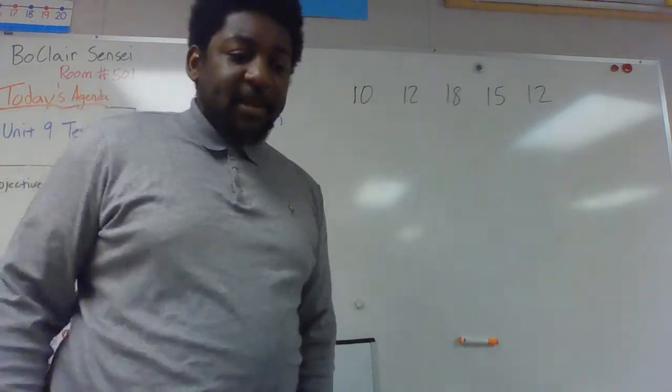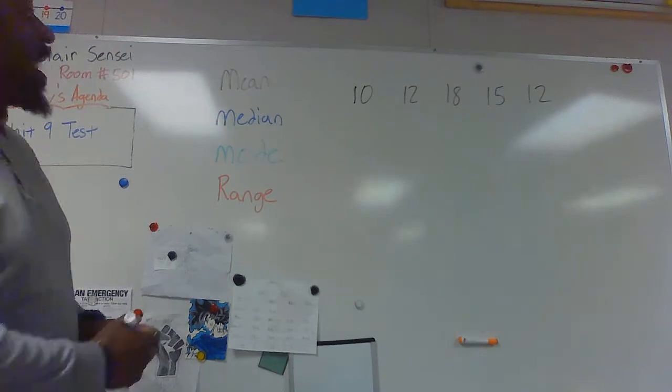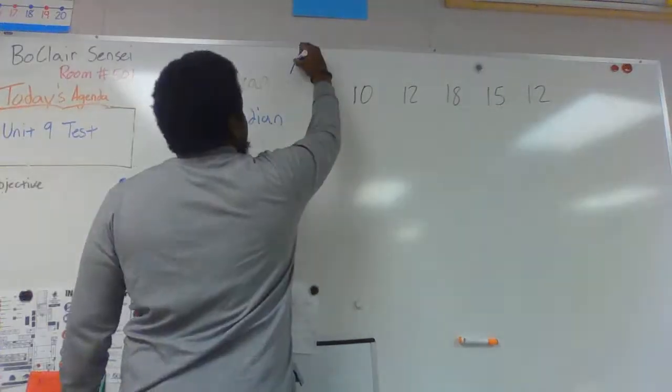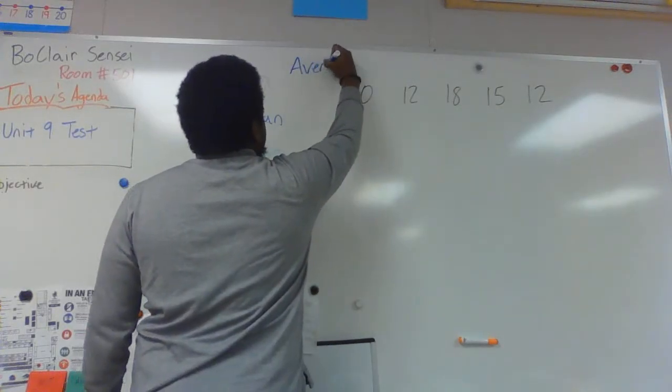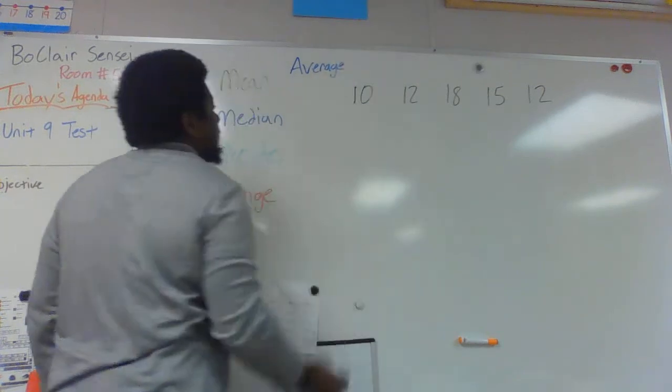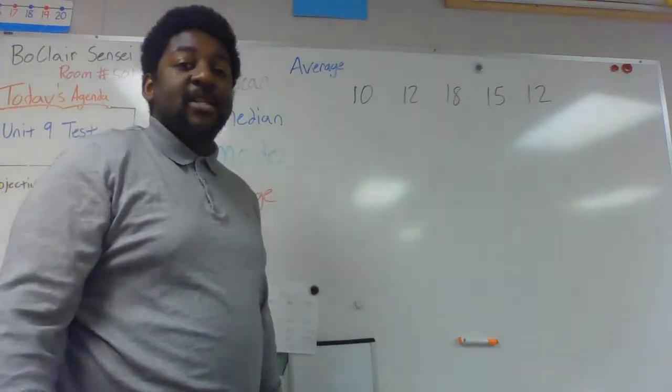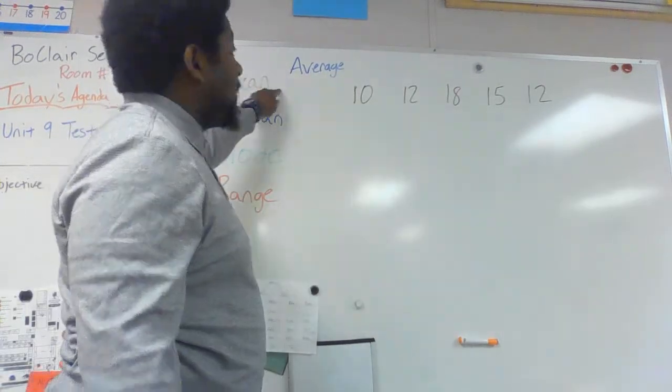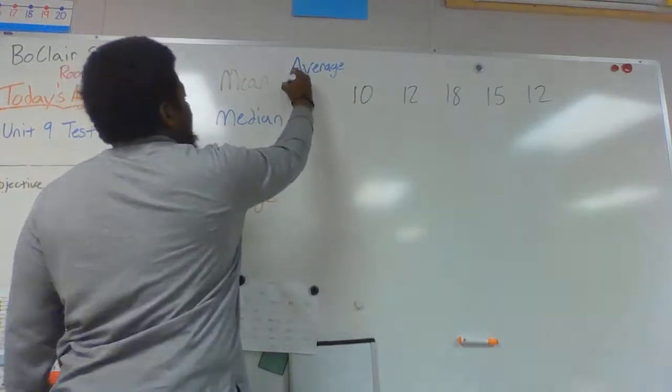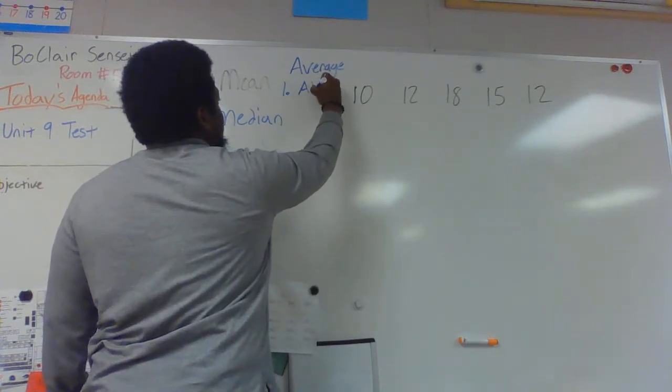So first thing we're doing is finding the mean. Like I said a little bit of a second ago, the mean is also called the average. To find the average of a group of numbers, there's two steps. Step one for finding the mean or the average is to add all your numbers.